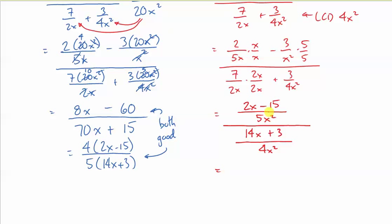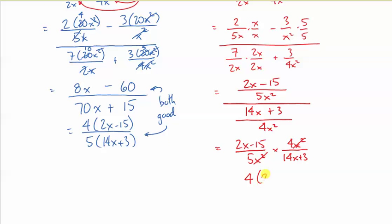What I do now when I have division, division of these fractions, is I write it as multiplication of the reciprocal. So, I change the denominator to its reciprocal. Let's cancel out the common x² factor, leaving me with 4 bracket 2x minus 15, and 5 bracket 14x plus 3, which is identical to what I just got. You can judge which type that you like better. They're both reasonable methods of solving. Good luck.